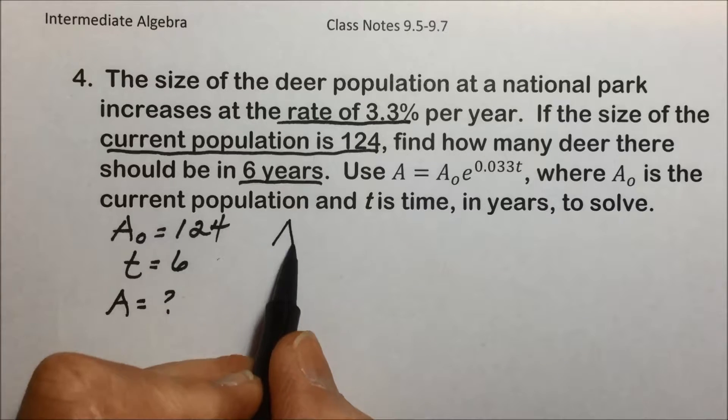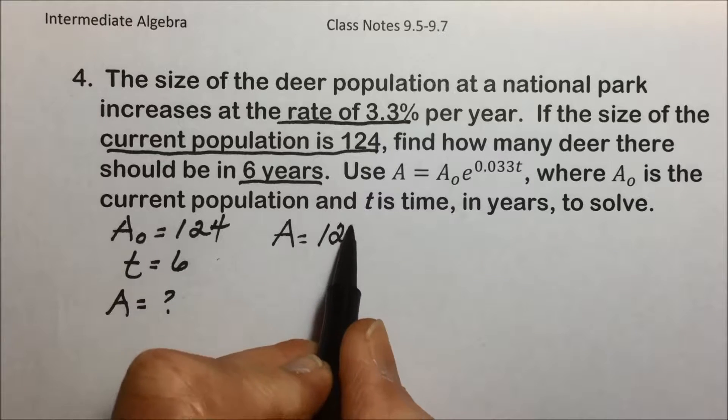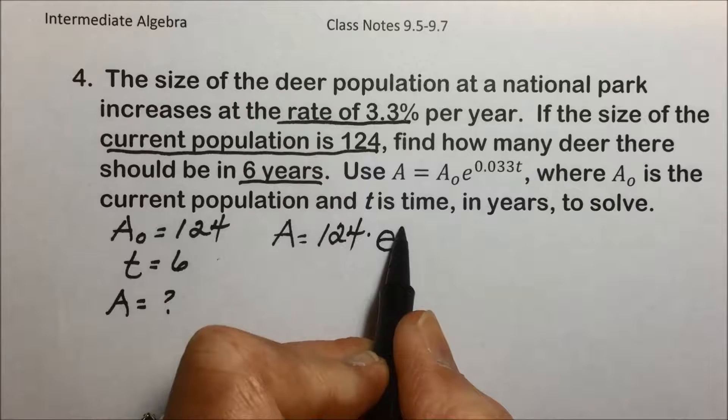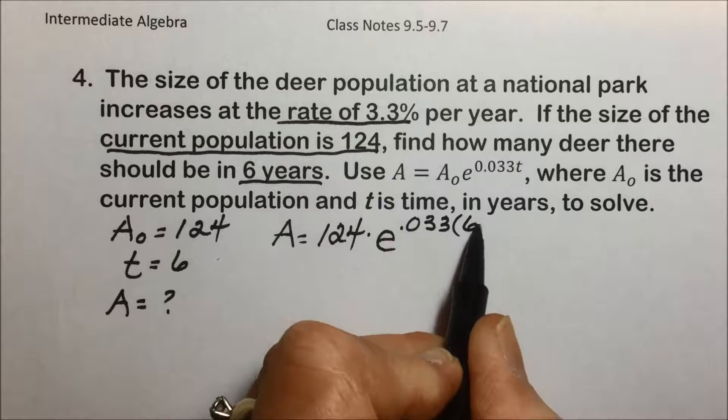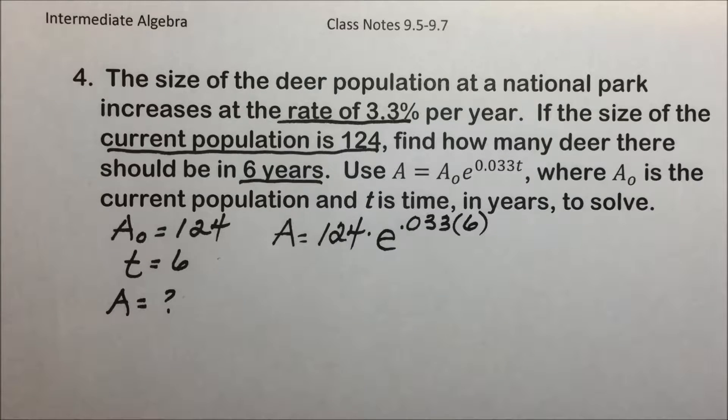Using the given formula, we'll replace the variables with the given values. So we have 124 times e to the 0.033 times t, which is 6.